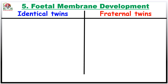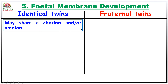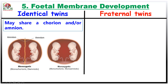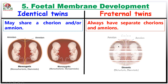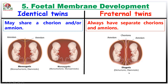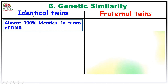The next contrasting feature is about fetal membrane development. Two membranes make up the embryo sac: the outer one is called the chorion and the inner one is called the amniotic. Identical twins may share a chorion and/or amniotic. As shown in the diagrams, monozygotic twins can be mono-chorionic and di-amniotic, or mono-chorionic and mono-amniotic. In contrast, fraternal twins always have separate chorions and amniotic membranes.